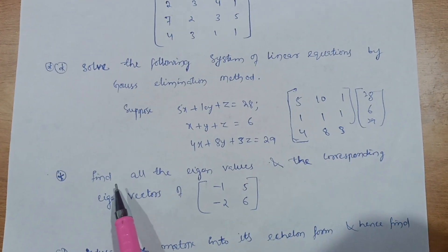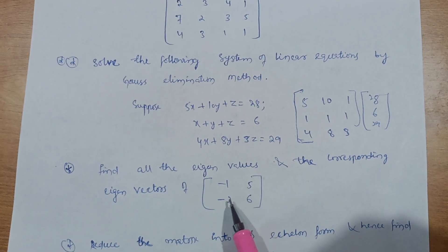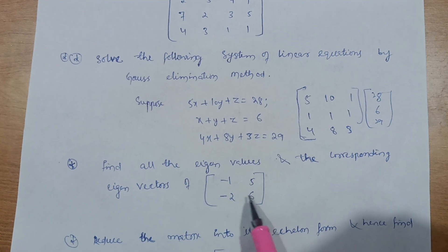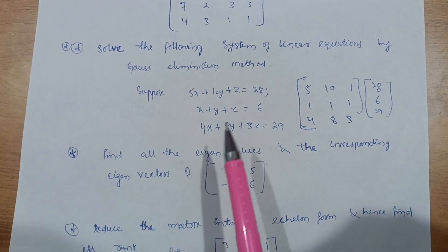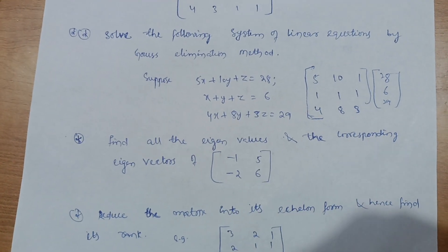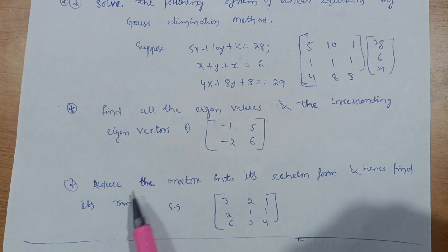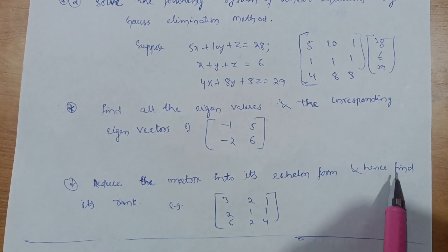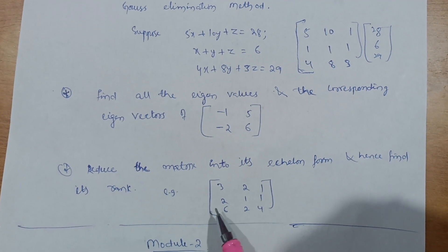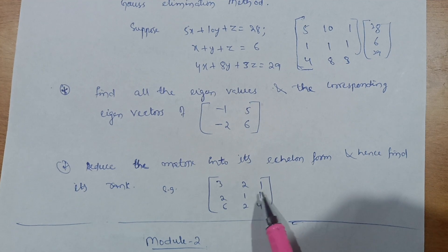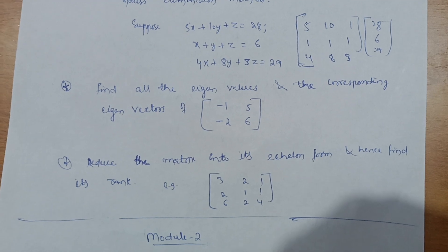The next concept is finding all eigenvalues and corresponding eigenvectors. For example, for the matrix [[-1, 5], [-2, 6]], you find the eigenvalues. Also, reduce the matrix into its echelon form and hence find its rank — for example, the matrix [[3, 2, 1], [2, 1, 1], [6, 2, 4]]. Go through these four concepts and you will conquer Module 1.